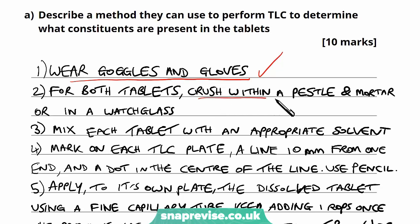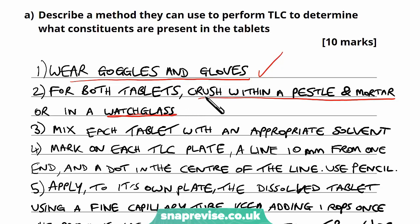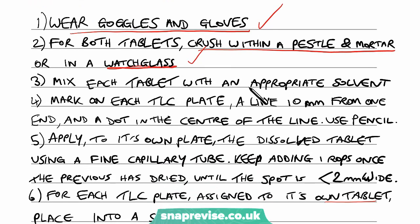For both tablets, crush them within a pestle and mortar or in a watch glass. Similar to the chloroplast experiment, we need to make this sample into a form that can be dissolved into a solvent so that all the constituents will be free. We need to take the tablets and crush them so they're no longer in a fixed form. Then mix each tablet with an appropriate solvent — this is very important because it allows all constituent molecules to be free and independent of each other so they can move across the stationary phase and be separated out and identified.